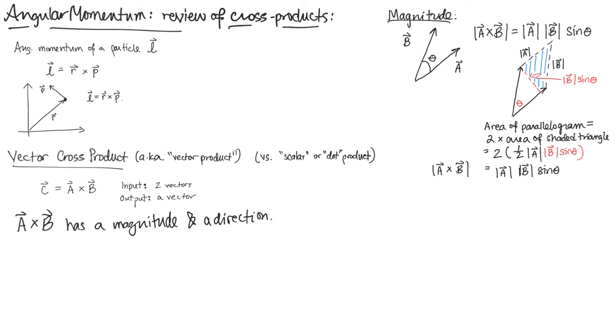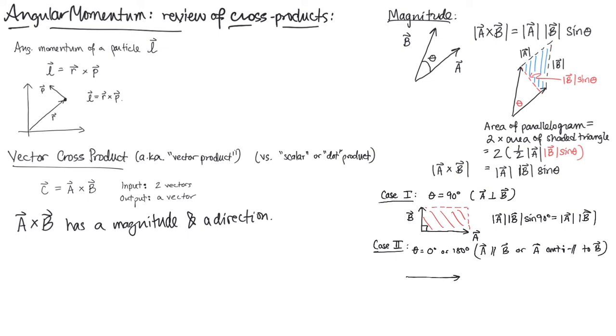So just to be really explicit about this, let's consider the following cases. In this case, we have mag A mag B times the sine of 90 degrees, which is just equal to mag A mag B, which is equal to the area of this rectangle, which is a special case of the parallelogram. In another case, let's consider when A and B are parallel or anti-parallel. So case two would be theta equals zero or 180 degrees, so A is parallel to B, or A is anti-parallel to B. In that case, we have A, we have B, and the area of that parallelogram, or maybe we have A going to the right and B going to the left.